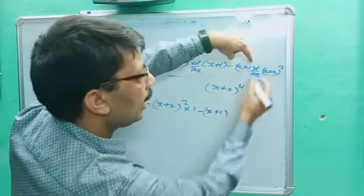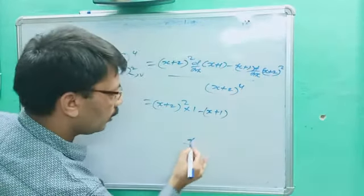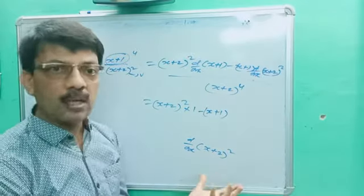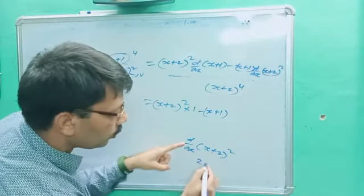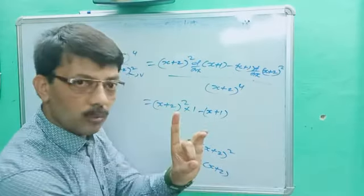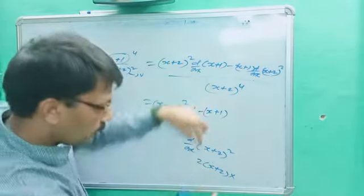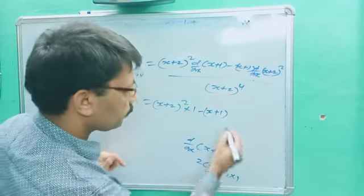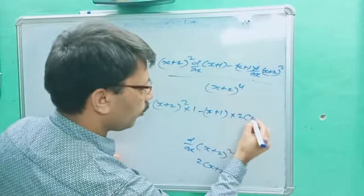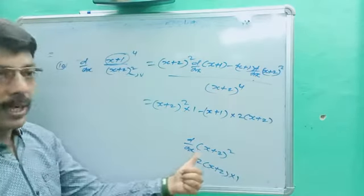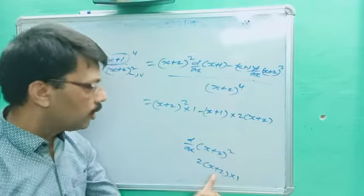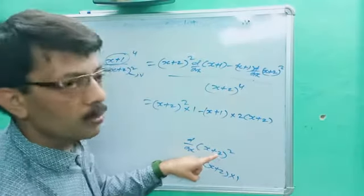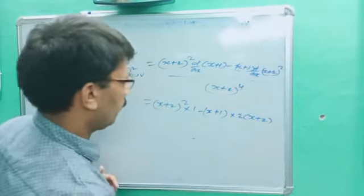For d/dx of (x+2)²: bring the power down — 2(x+2)^(2-1) = 2(x+2) — multiplied by d/dx(x+2) which equals 1. So d/dx[(x+2)²] = 2(x+2). Substituting back: (x+2)²·1 minus (x+1)·2(x+2), all divided by (x+2)⁴. Cancel one (x+2) from numerator and denominator, leaving (x+2)³ in the denominator.